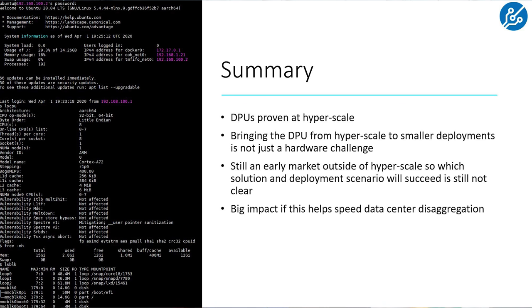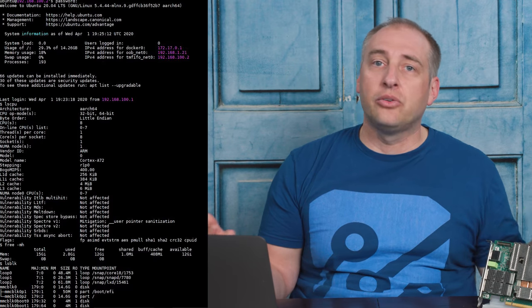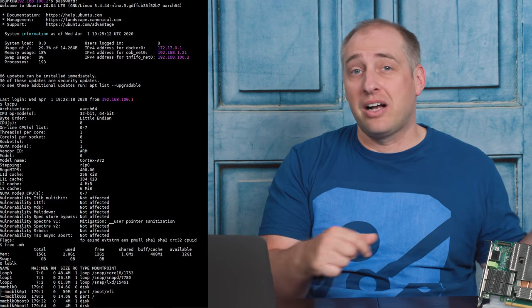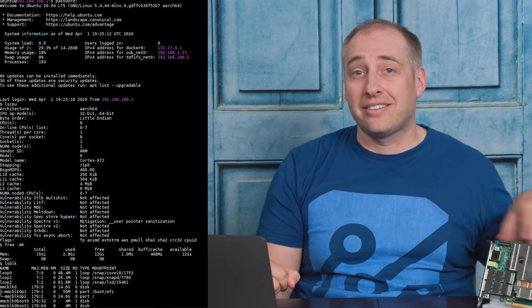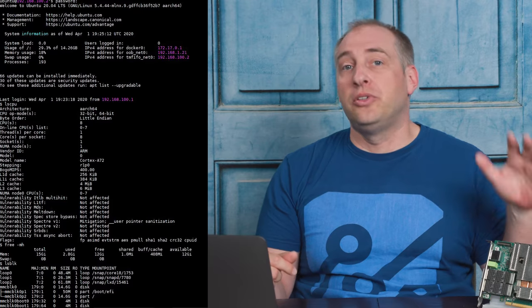Let's get to the summary, and let's show what this Bluefield 2 looks like all fired up. Here you can see Ubuntu with the eight-core ARM CPU, 16 gigabytes of memory, and 16 gigabytes of storage. We're getting into this via SSH — you can either use the out-of-band port or over PCIe in-band. It's very similar to what you'd see if you had a little Xeon D or Atom box, or a Raspberry Pi, sitting next to your desk and you're just SSHing into it.